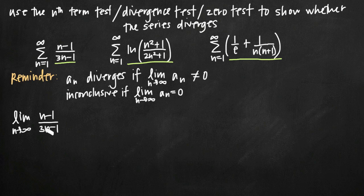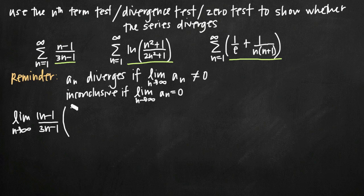We just have a rational function, so we can evaluate this limit in one of two ways. We can look at the coefficients on the largest degree n terms in both the numerator and denominator. The largest degree term in the numerator is n, and in the denominator is 3n, so we have 1n over 3n — the limit is 1/3.